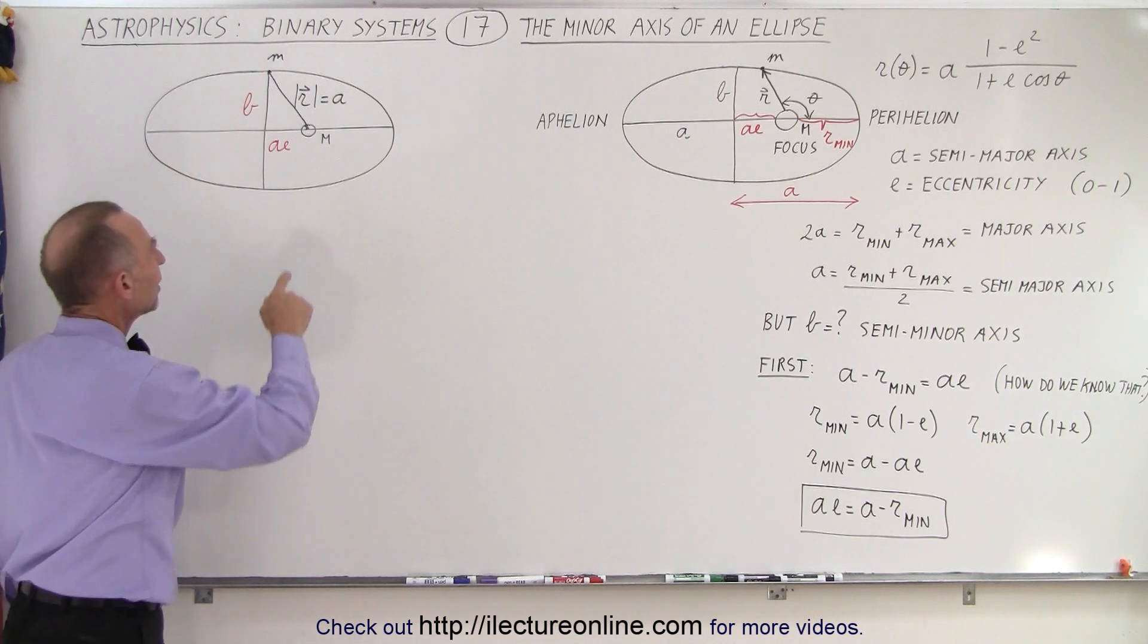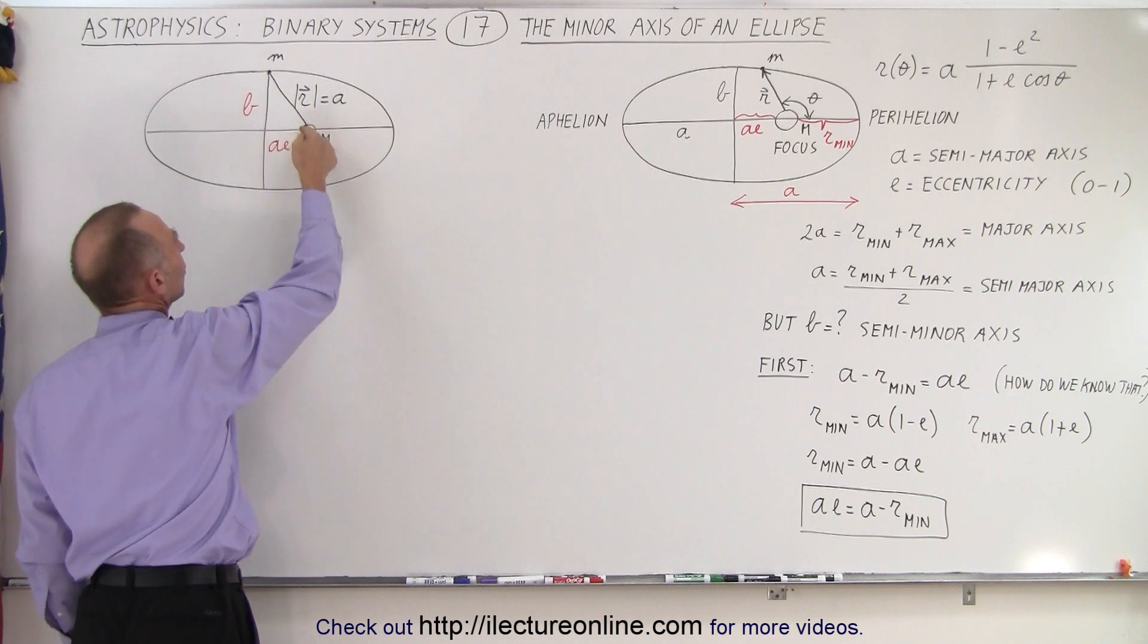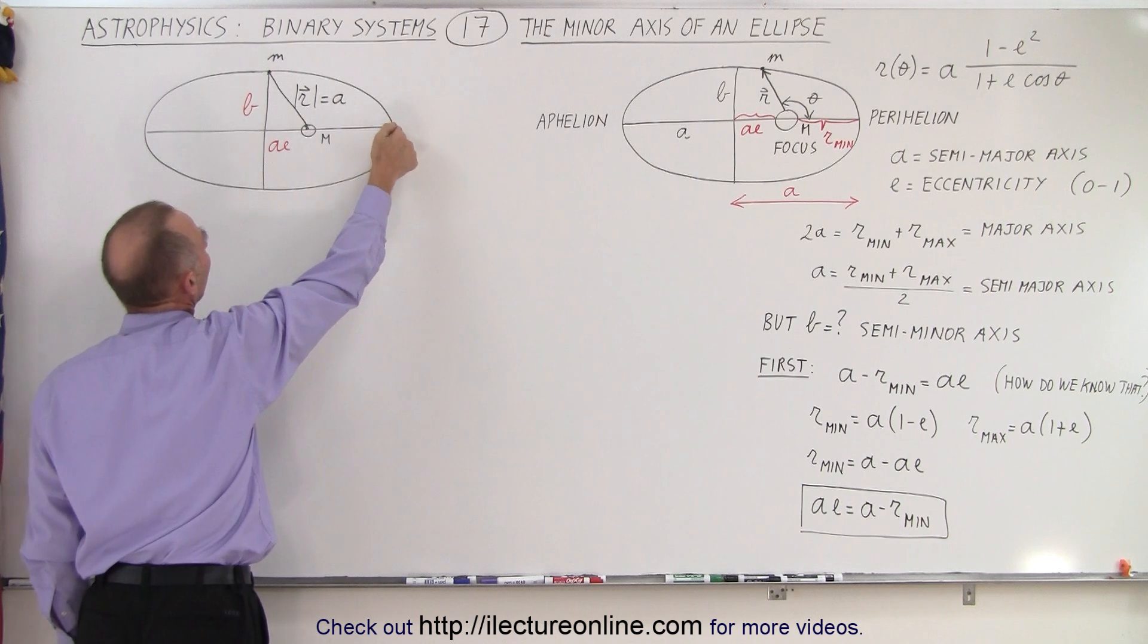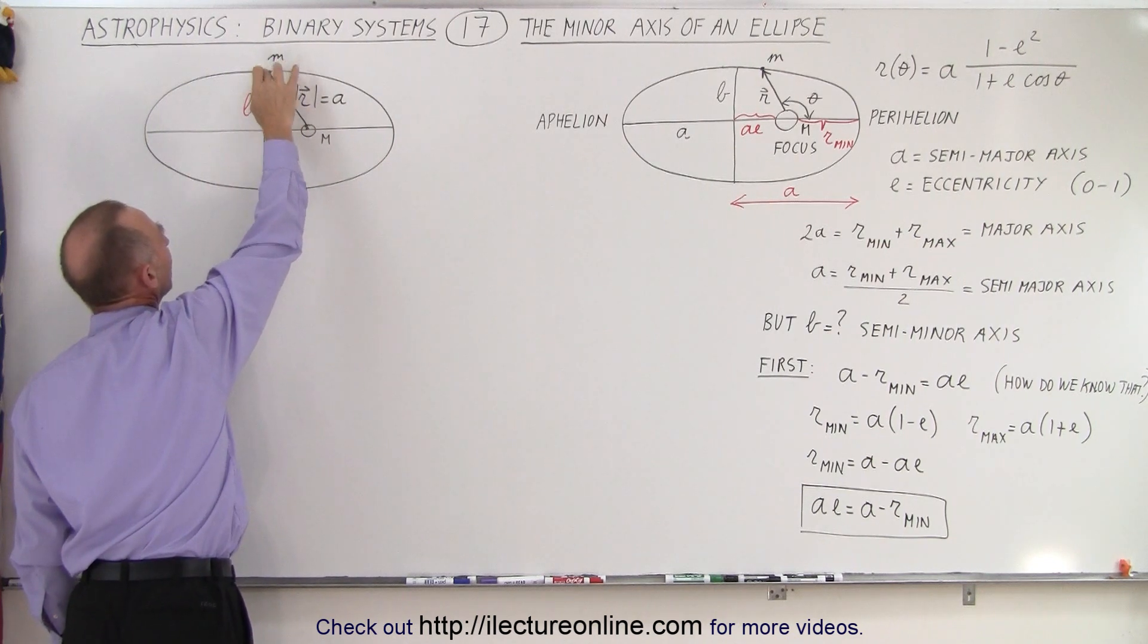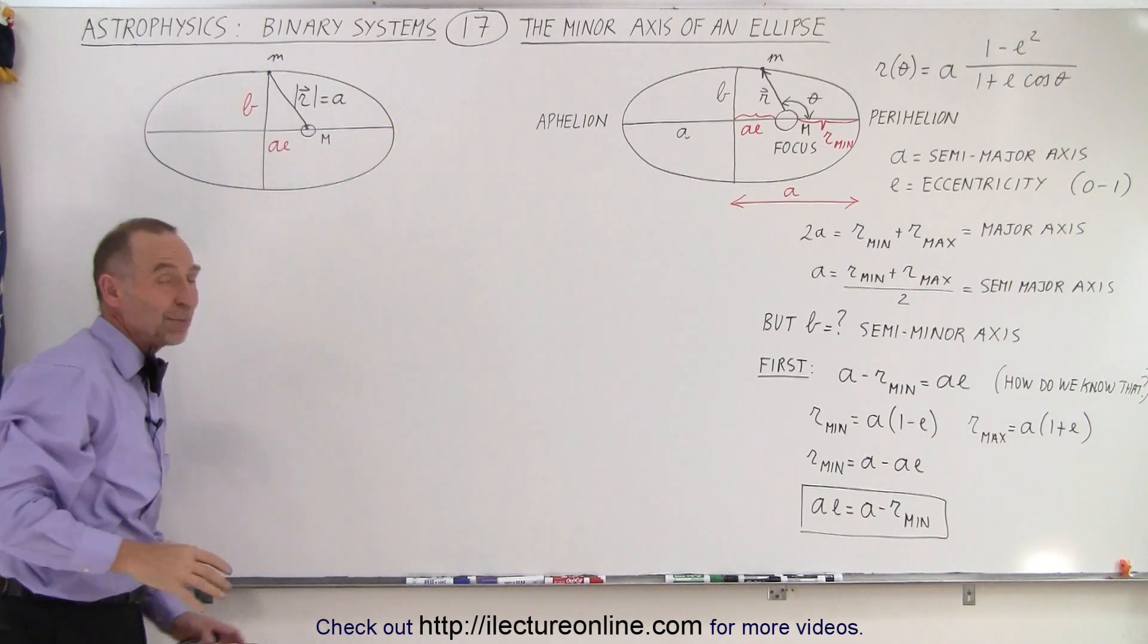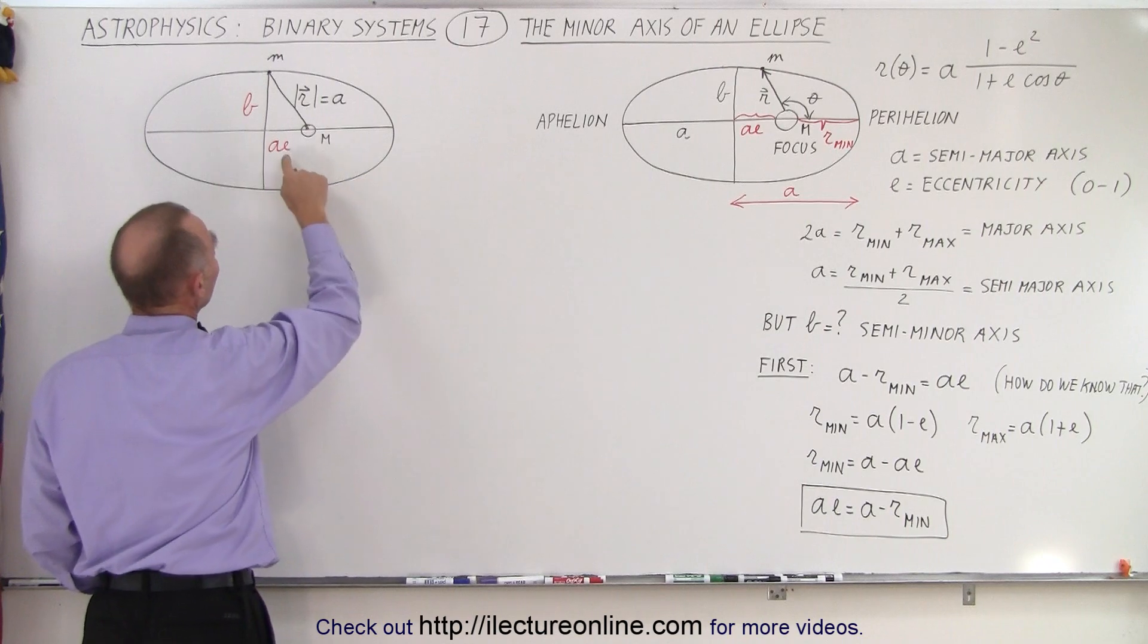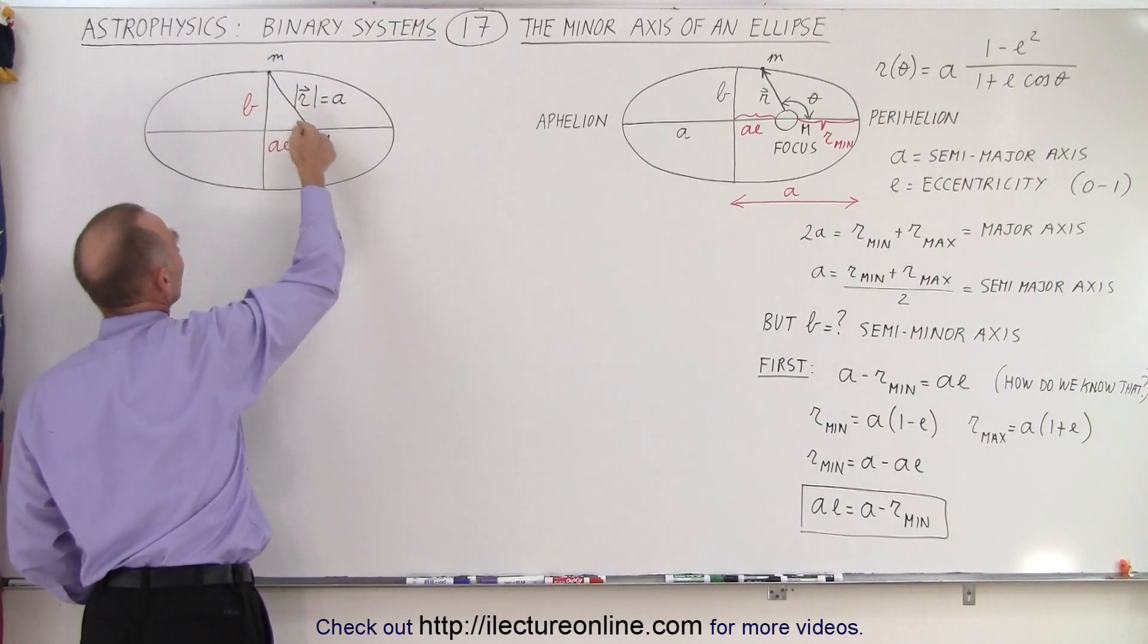Well, how can we be sure that that's the case? Well, notice if e is equal to 1, then this distance and this distance would be the same. In other words, the sun would be right here at the edge, and this distance A would be the same as this distance A. And then this point M would be right here, and the planet would just be going back and forth like this in an extremely eccentric orbit, essentially a straight line back and forth. And so that makes sense that if e is equal to 1, this distance A here would be the same as this distance here.